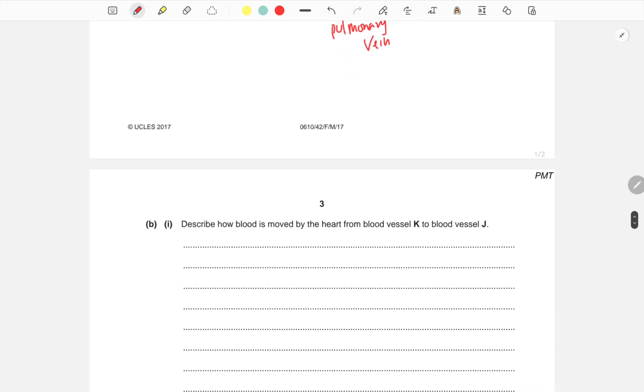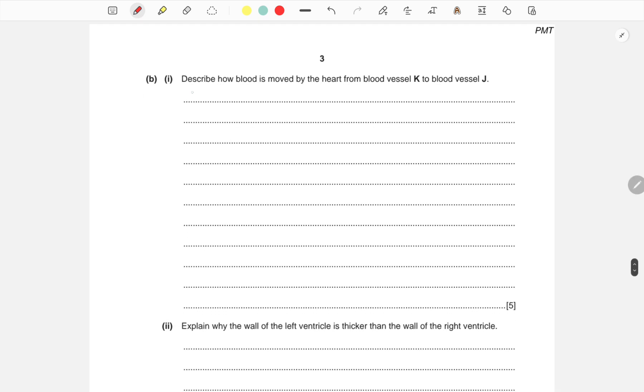There are five key points you need in the answer. First, the blood enters the left atrium through the pulmonary vein, which has blood coming from the lungs. Number two, the atria contracts to push blood into the left ventricle.